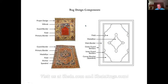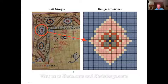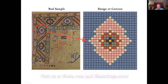Sometimes they do an open field, where you wouldn't have spandrels and a medallion — just one big open field with some sort of design on it. This is how they design a rug. They come up with the design, put it into a cartoon like this, and then give it to the weaver and say, weave this rug.